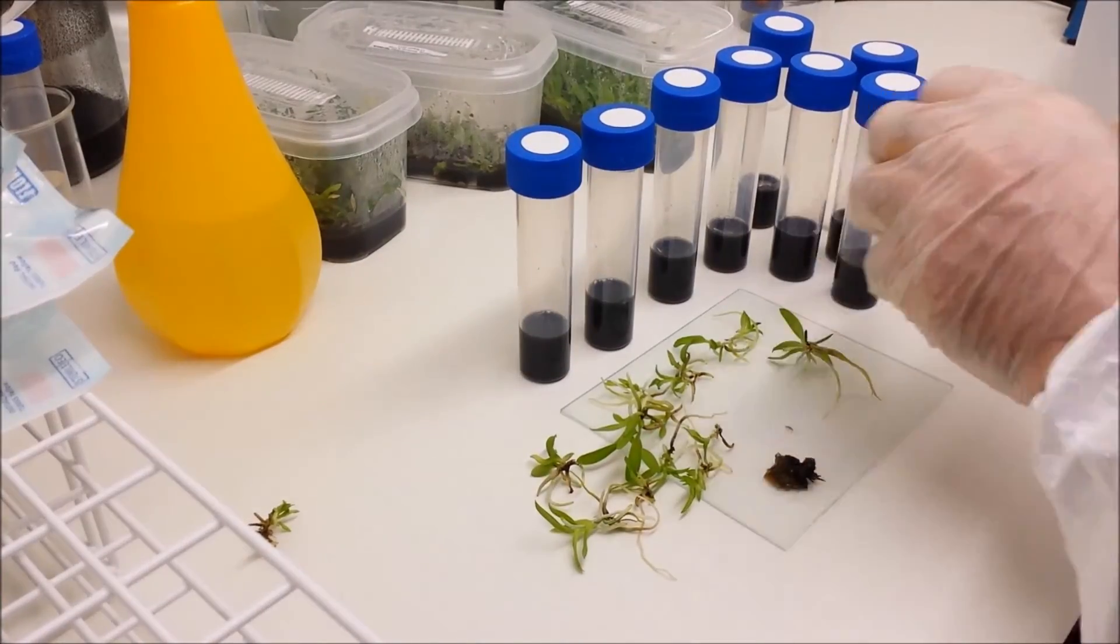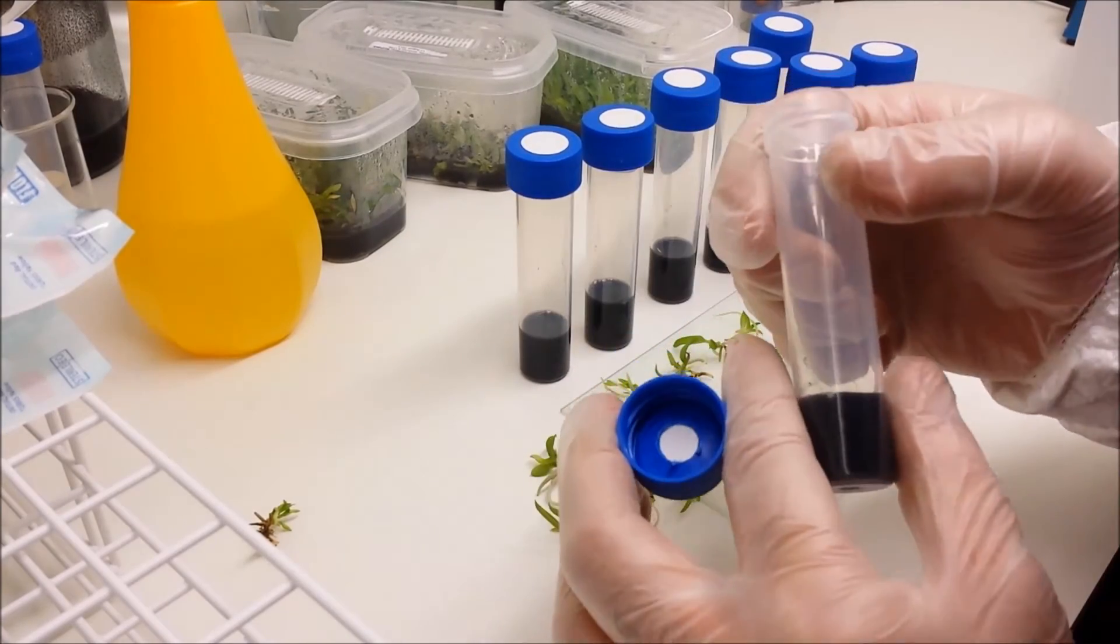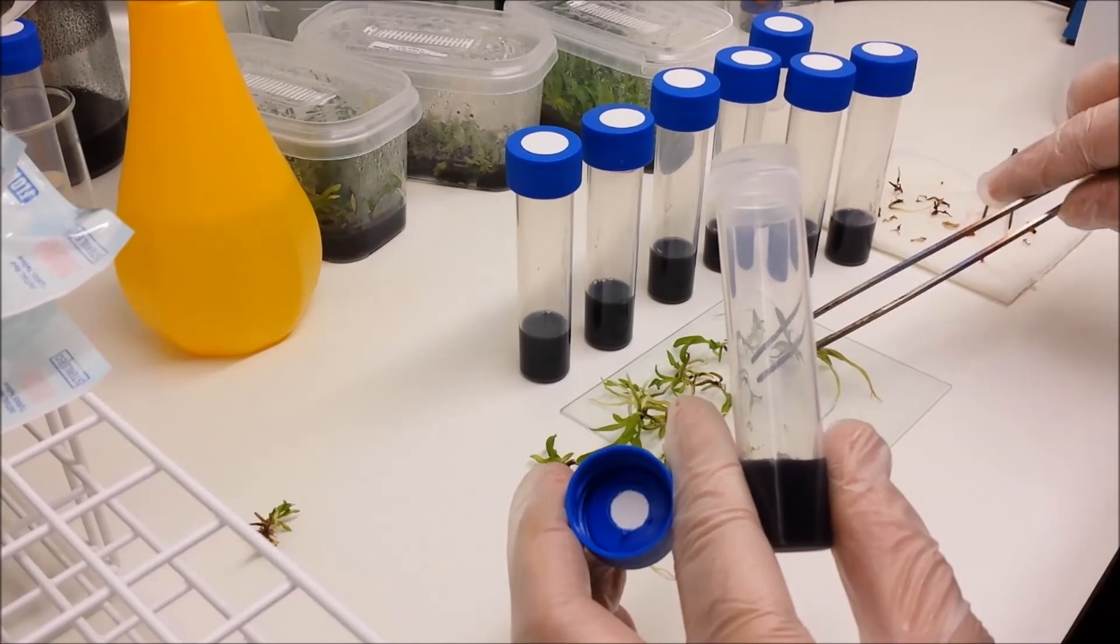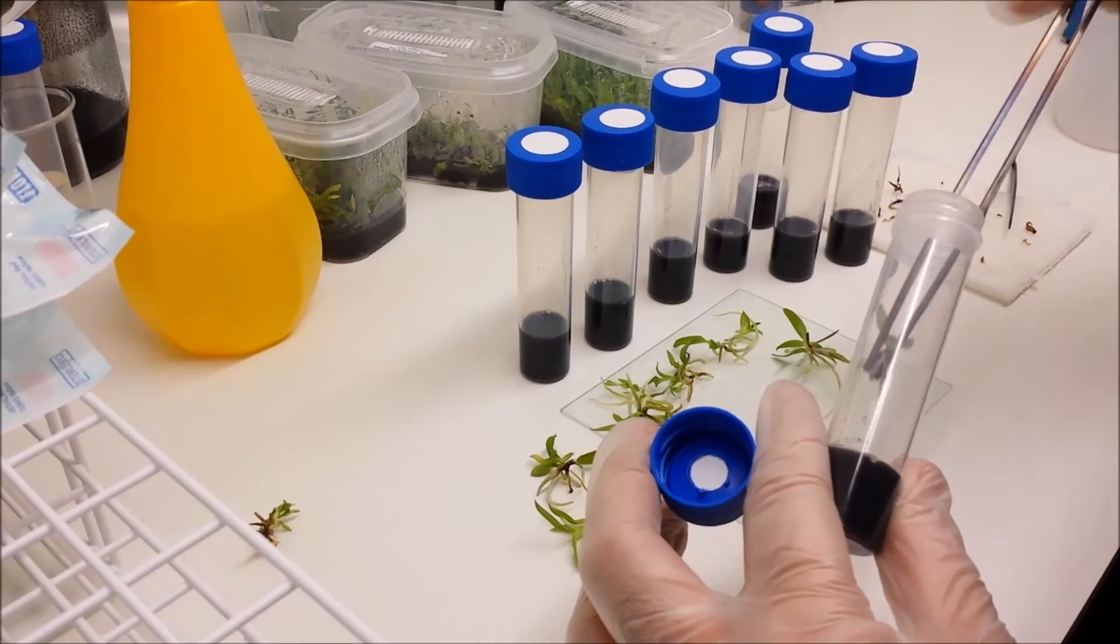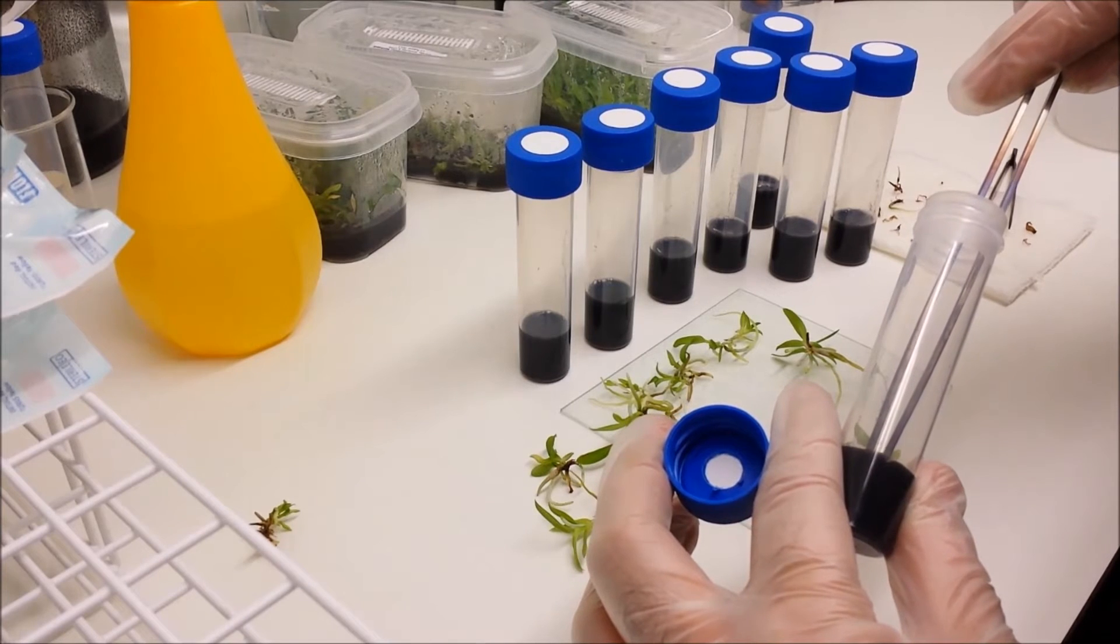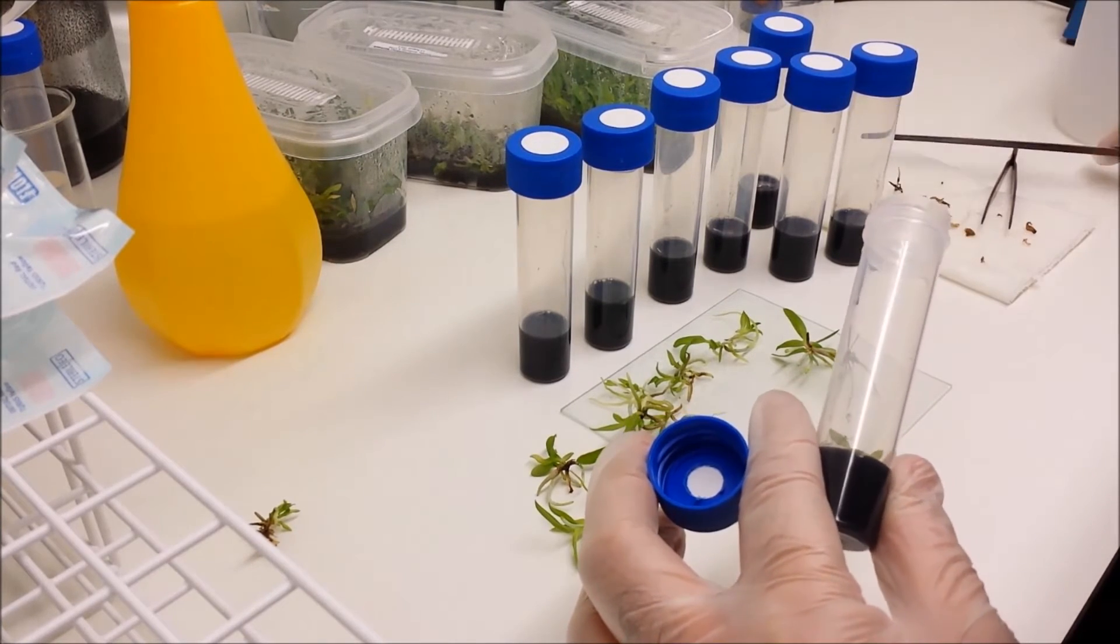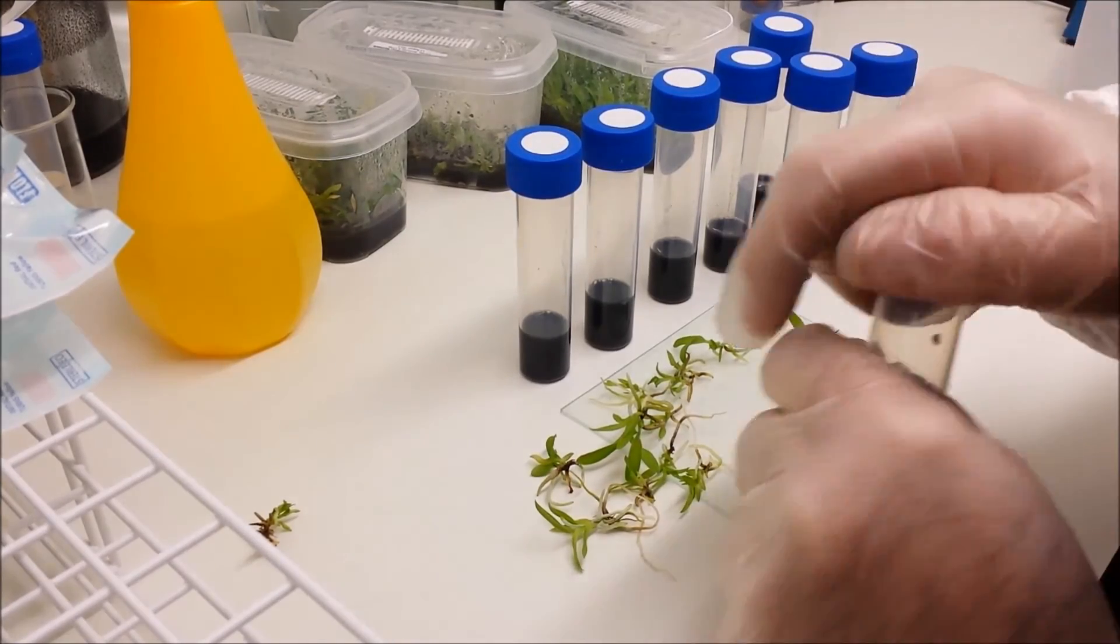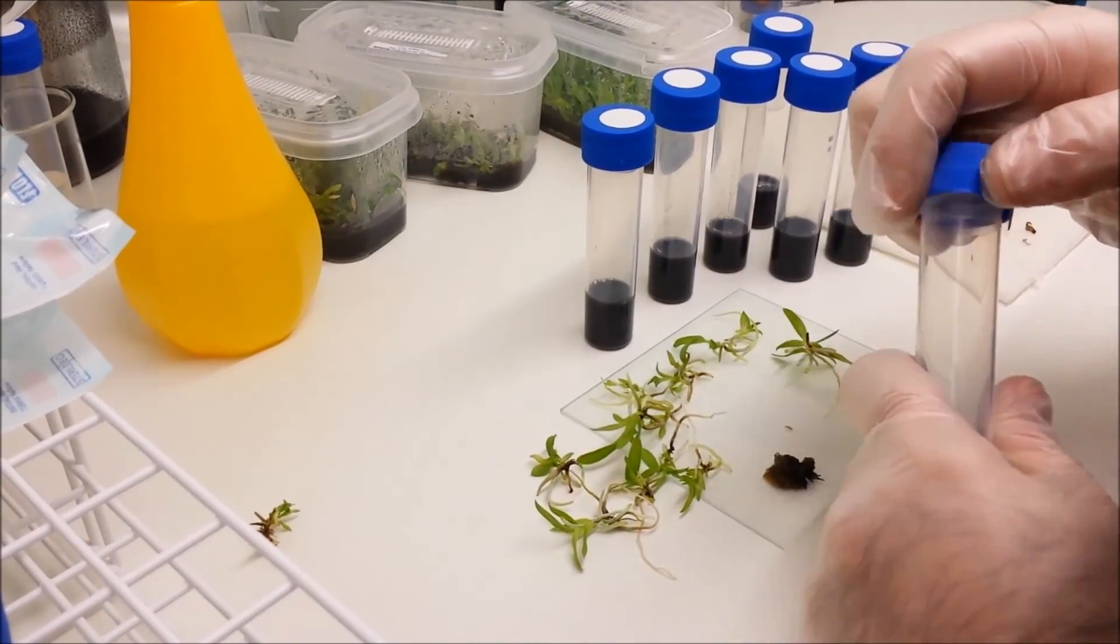Now these will grow away. Temperature wise keep these around about sixteen to eighteen degrees, in reasonable light but not direct sunlight. You don't want to cook them. And they will probably grow like that for perhaps six months or so, by which time it should be large enough to remove from the flask or flasklet and pot up into regular compost or bark.